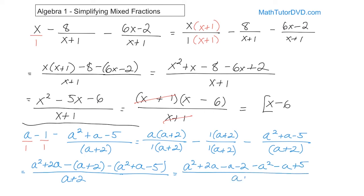On the bottom it's just a plus two. Now let's combine terms. A positive a squared and a negative a squared cancel to zero. For the a terms: positive two a, minus a, minus a gives two a minus two a, which is zero — they all cancel. All that remains are the constants: negative two plus five gives positive three. So the numerator is just three and the denominator is a plus two. The final answer is three over a plus two.